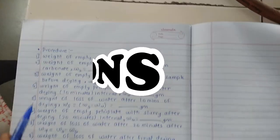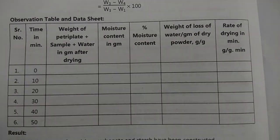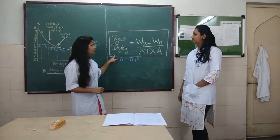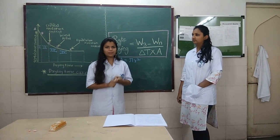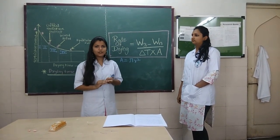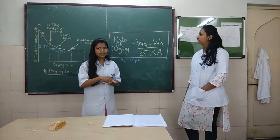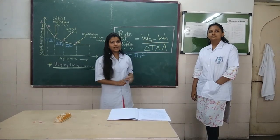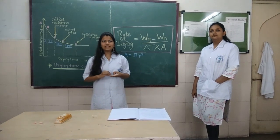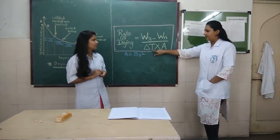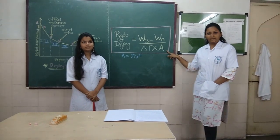We have to note down the following observations. W1 is the weight of the empty petri dish. W2 is the weight of the petri dish with the sample. W3 is the weight of the petri plate with the slurry before drying. W10 is the weight loss of water after each time interval, where delta t is the time interval of 5 minutes, and area is the area of the petri plate, calculated by pi r squared.